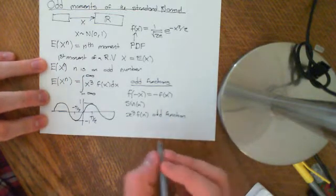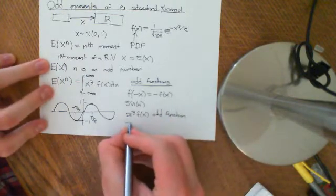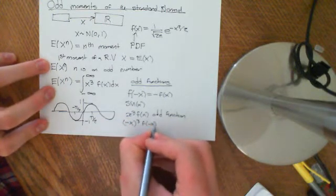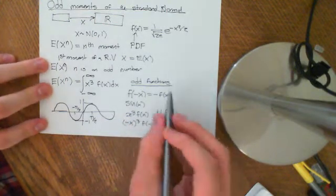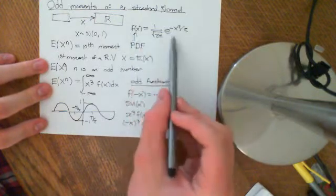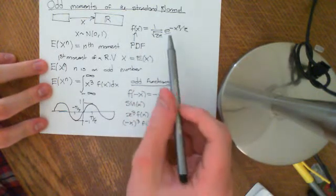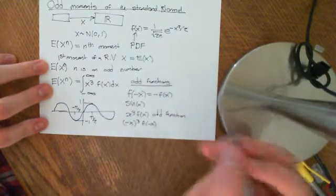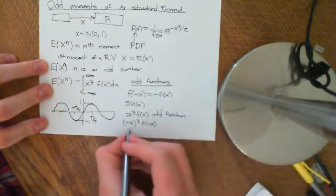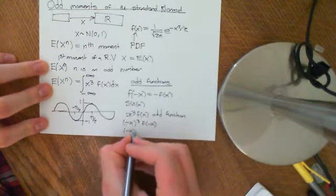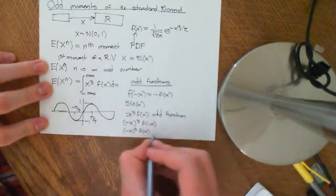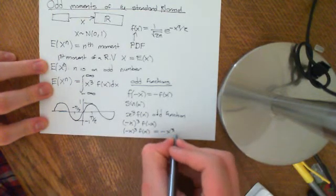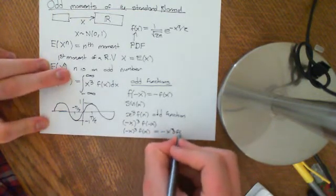Because if I put negative x in here, if I put negative x in, negative x cubed of f of negative x. f of negative x, because the function f of x, this PDF up here, is perfectly even, meaning that f of x is equal to, sorry, f of negative x is equal to f of x. So this is equal to negative x cubed of f of x. Now negative of x cubed is equal to negative x cubed f of x. So in that case it is a perfectly odd function.